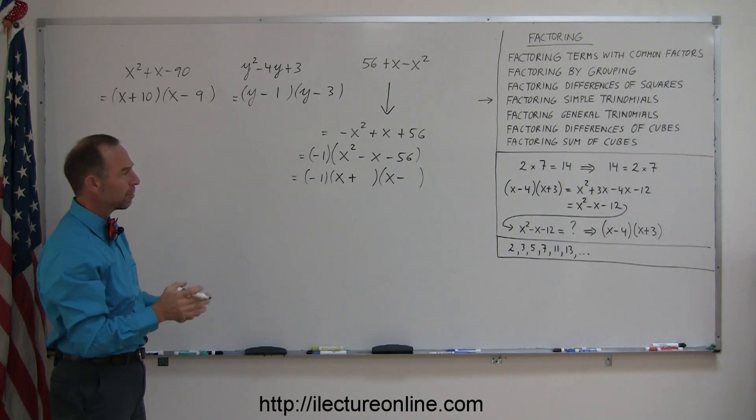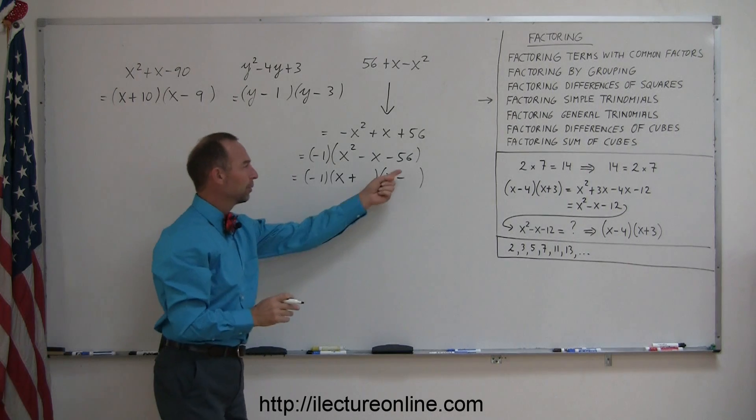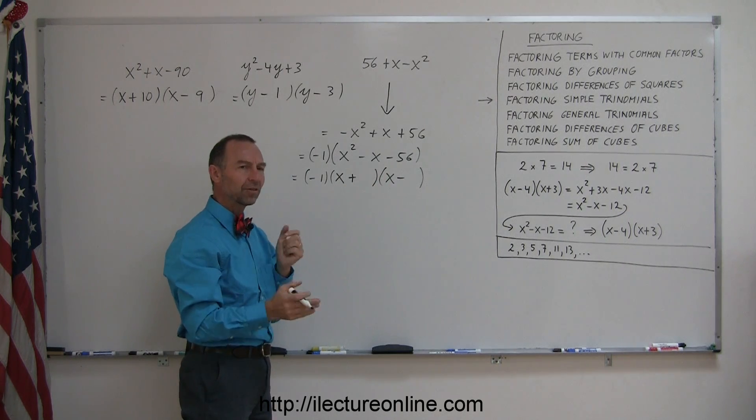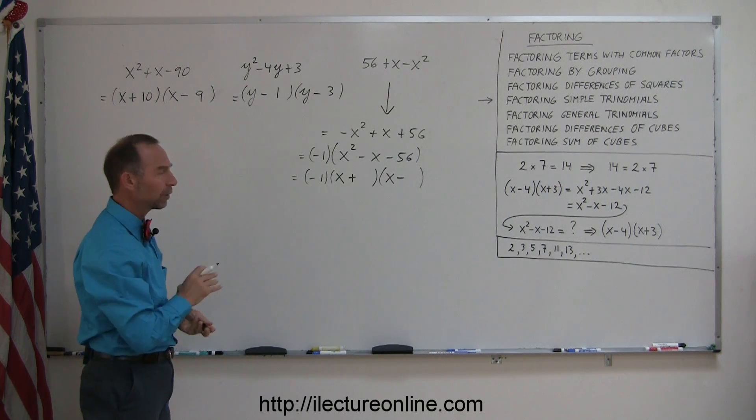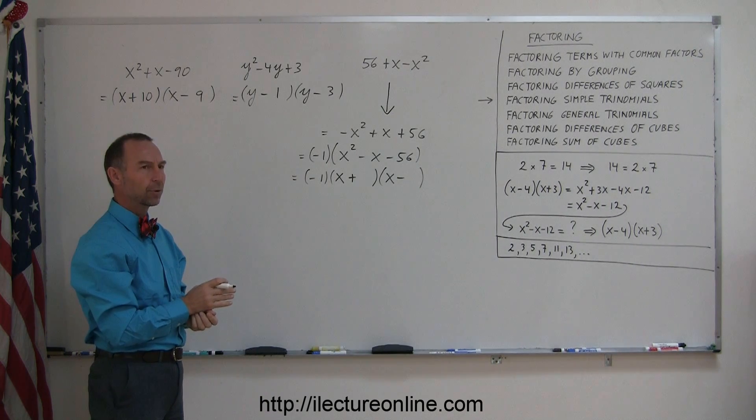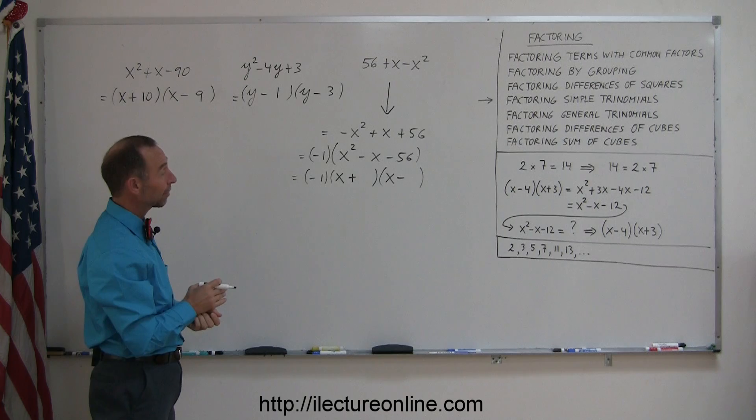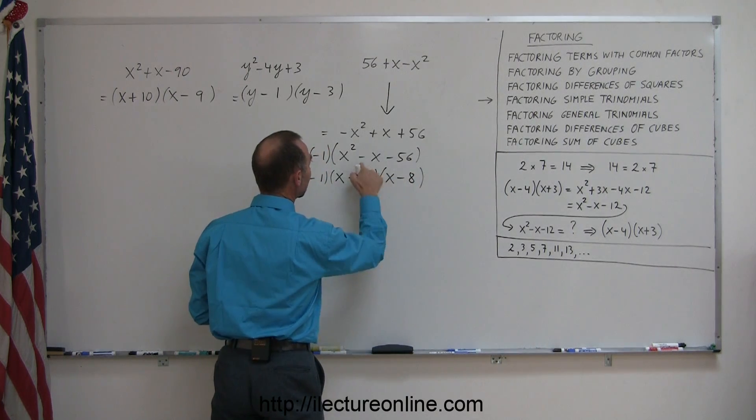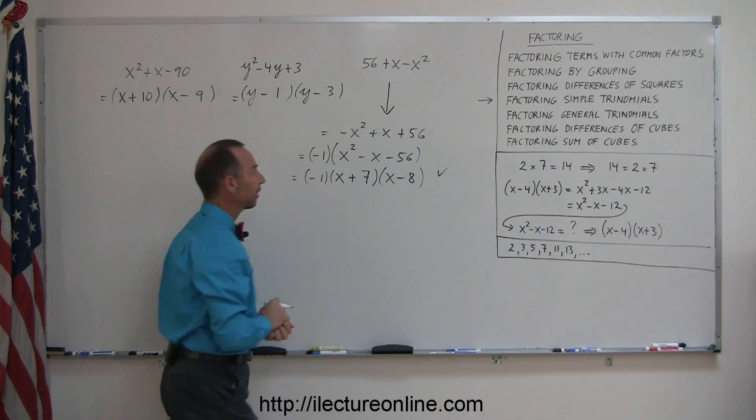So you're looking for two numbers, and when you multiply them together you get a 56. When you add them together you get a negative 1. So that means they need to be one apart, and the negative 1 is bigger. So how about a negative 8 and a positive 7? That works, because 8 times 7 is 56, and if you add them together you get negative 1. So there's your answer.